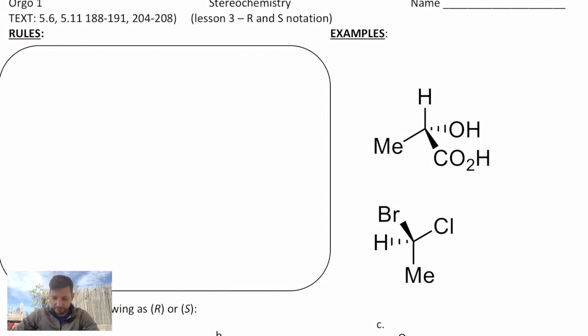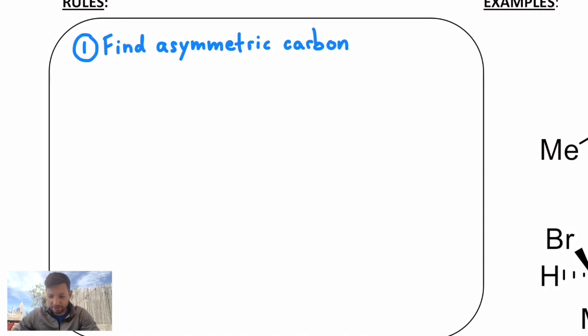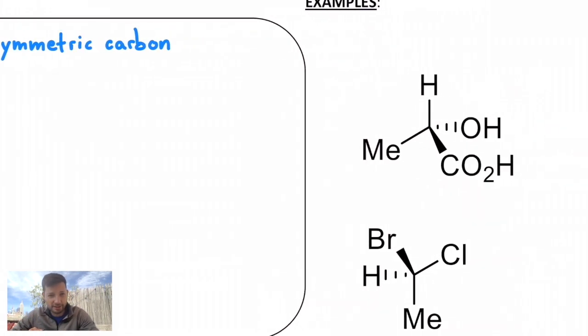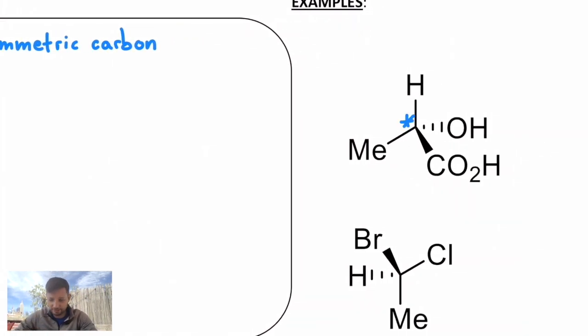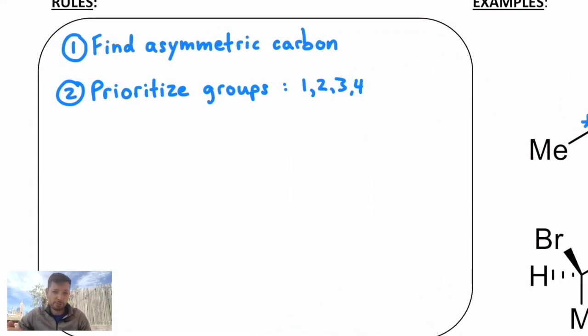So first of all, the rules are such that you find an asymmetric carbon. There's one right there in that lactic acid molecule off to the right. Secondly, you prioritize the four different groups that are attached to that asymmetric carbon 1, 2, 3, and 4. How do you prioritize them? This is what the rules are according to the Cahn-Ingold-Prelog rules.